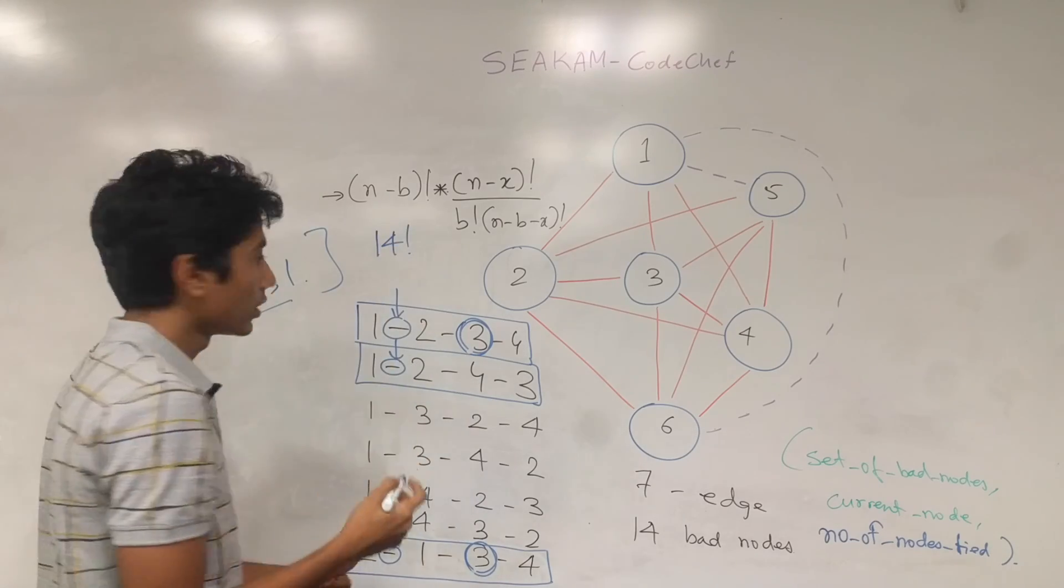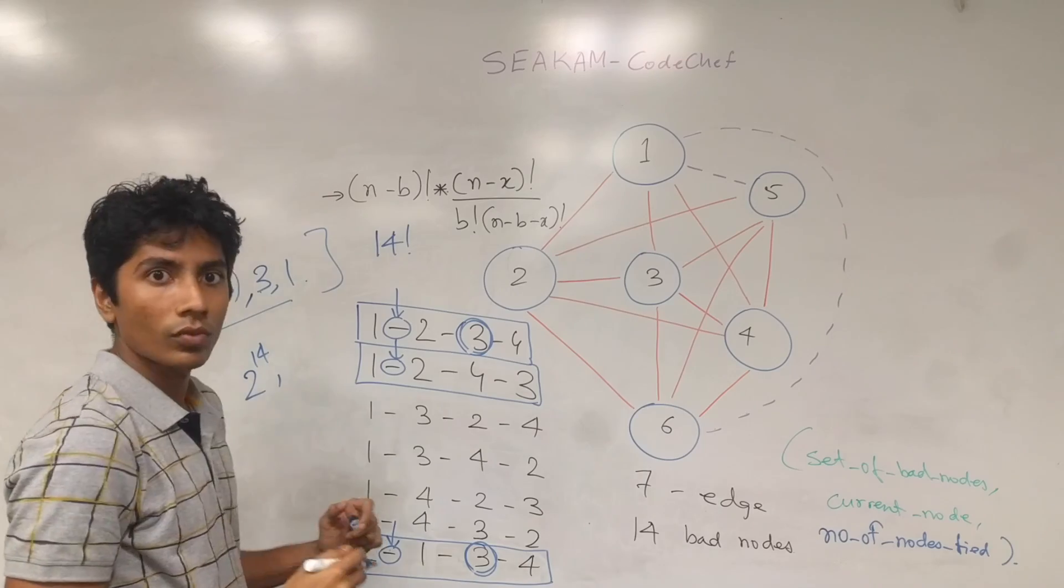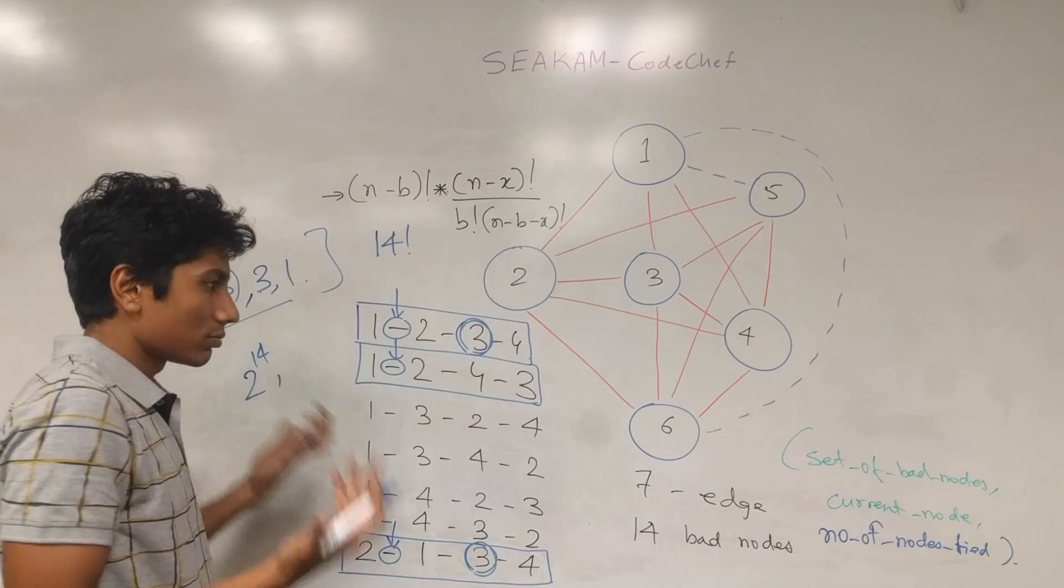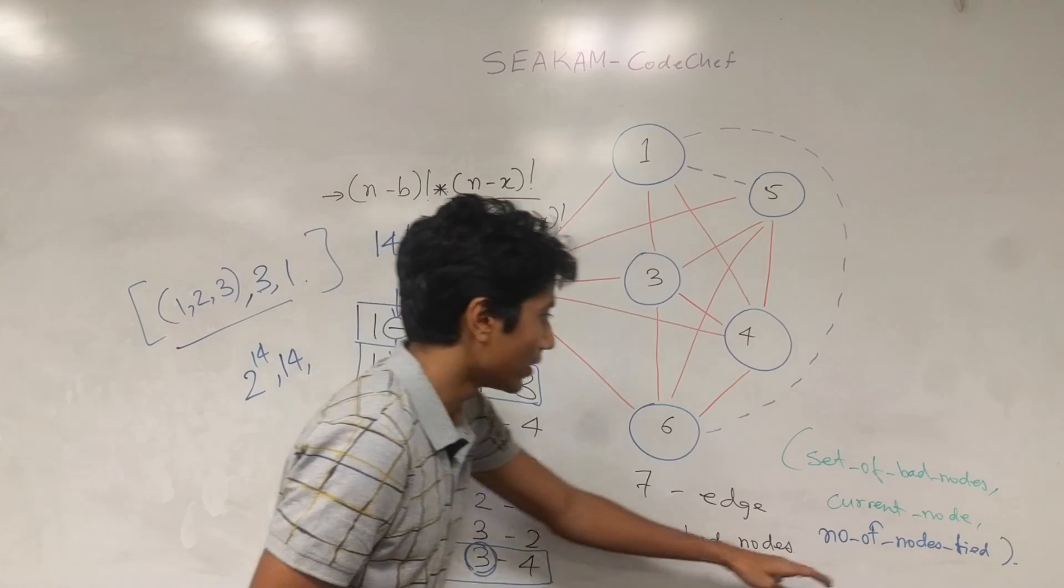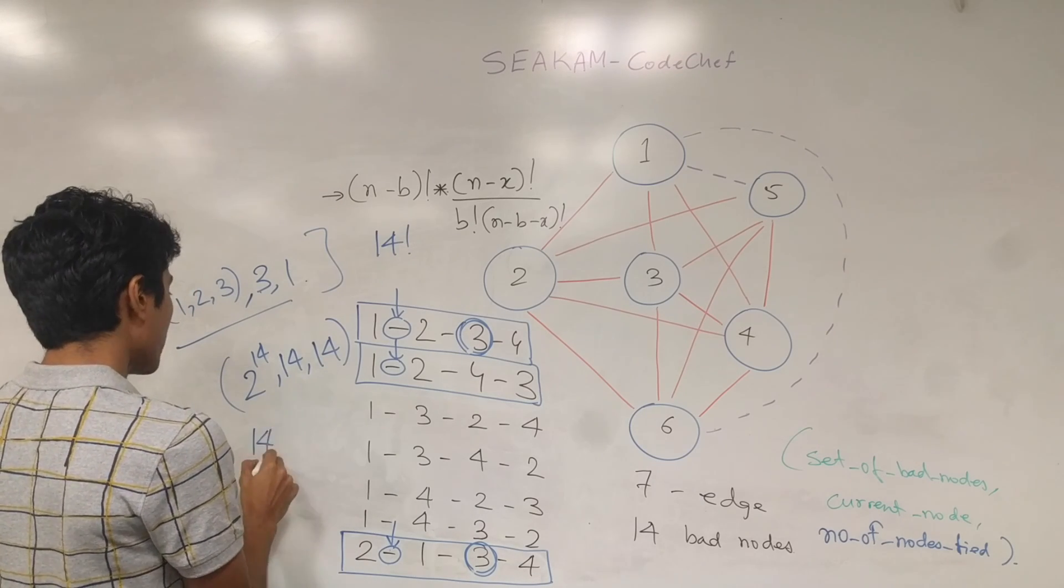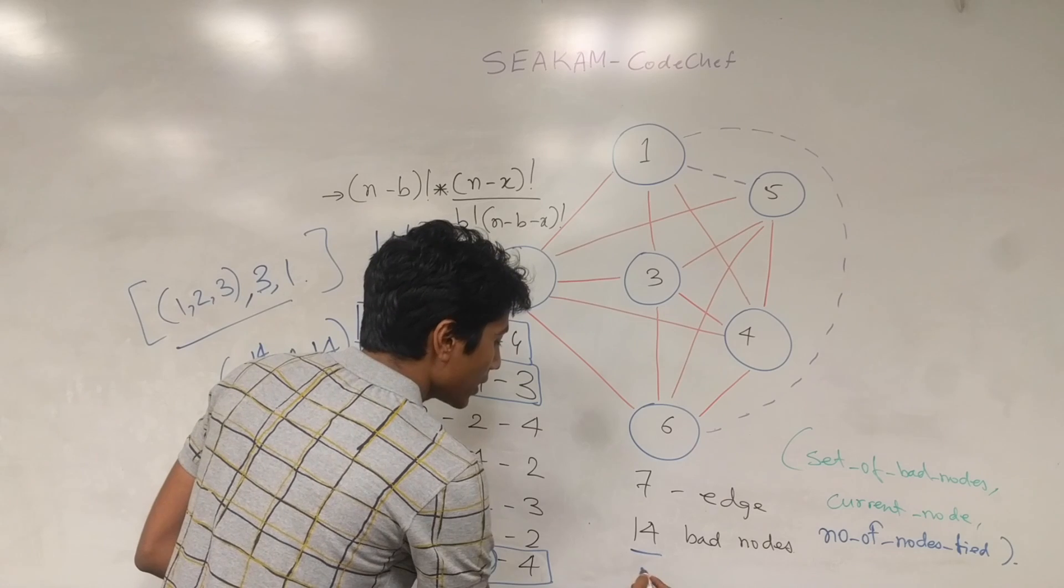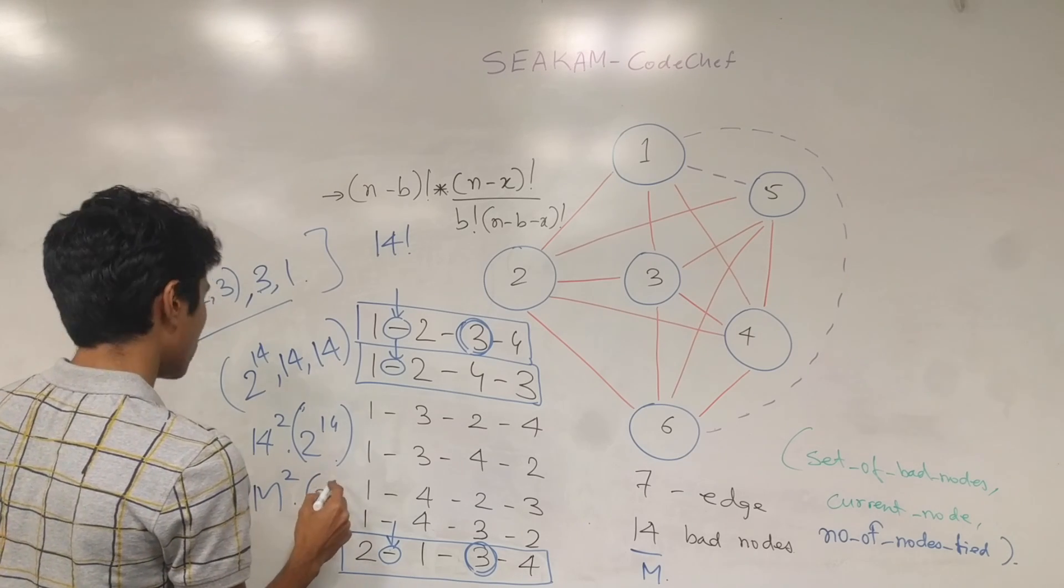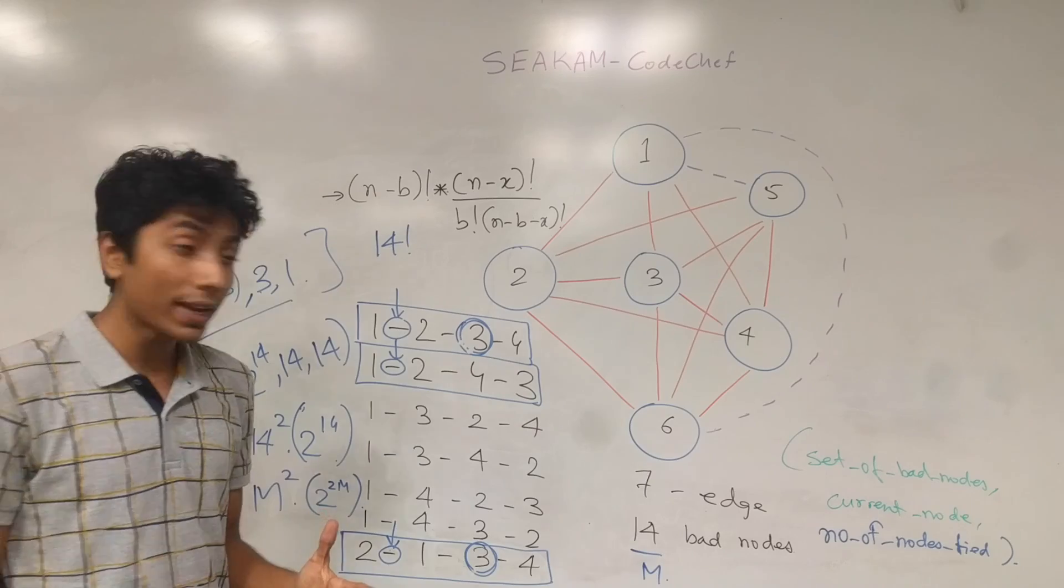Instead of 14 factorial which we were looking at, this state has the set of bad nodes, which is 2 raised to power 14 in number. Either you take the node or you don't. So there are 14 at most, so 2 raised to power 14. The current node, so that's 14 in number because there are 14 nodes. And number of nodes tied, well, that's again 14. So this is what you have. You have 14 square into 2 raised to power 14 as your overall time complexity. So if you take this to be m as defined in the question, you have m square into 2 raised to power 2m as the overall time complexity. This is the complexity that you require if the DP works.